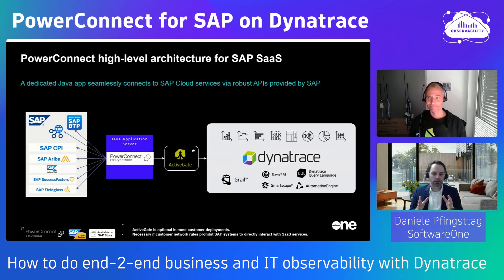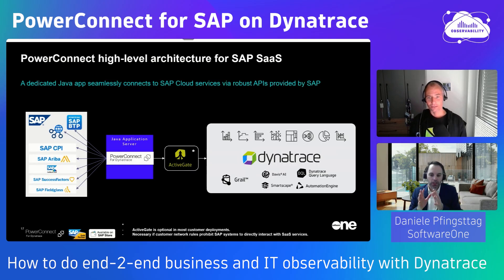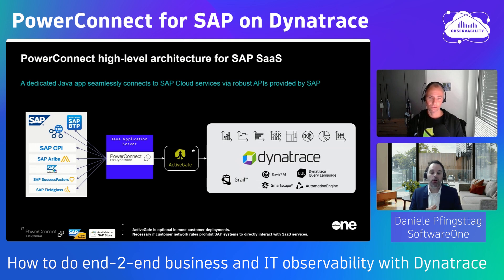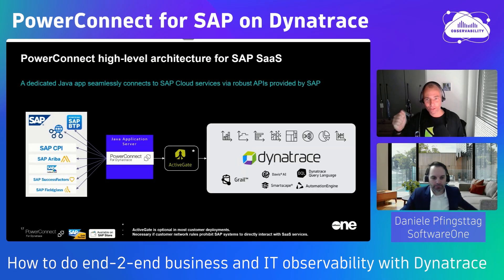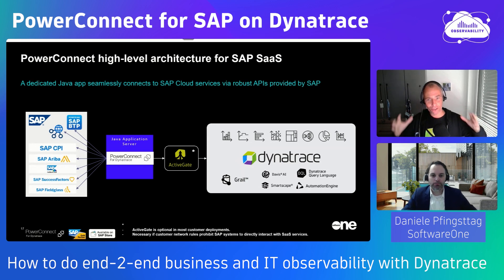In summary, PowerConnect is a quick and easy installation and setup. We see customers up and running and monitoring their SAP systems in as little as two to three hours — it's not a typical implementation project, it's a fast and easy way to get started. The PowerConnect component by SoftwareOne pulls data from SAP and pushes it to Dynatrace. You have a ready-to-go Dynatrace app and many dashboards, and that data is available for everything in Dynatrace.